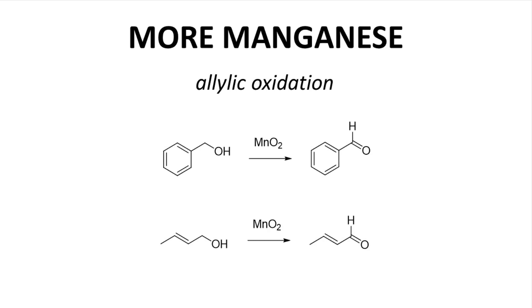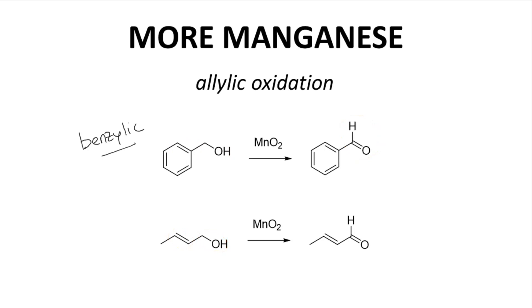Another manganese oxidant is manganese dioxide. Manganese dioxide is not as reactive as permanganate — it can oxidize alcohols that are next to a C–C pi bond. In the top reaction, the alcohol carbon is right next to a pi bond; this is called a benzylic alcohol, and it is readily oxidized to an aldehyde. The lower reaction also has a pi bond next to an alcohol — since the pi bond is not part of a benzene ring, this is called an allylic alcohol, and again the product is an aldehyde.